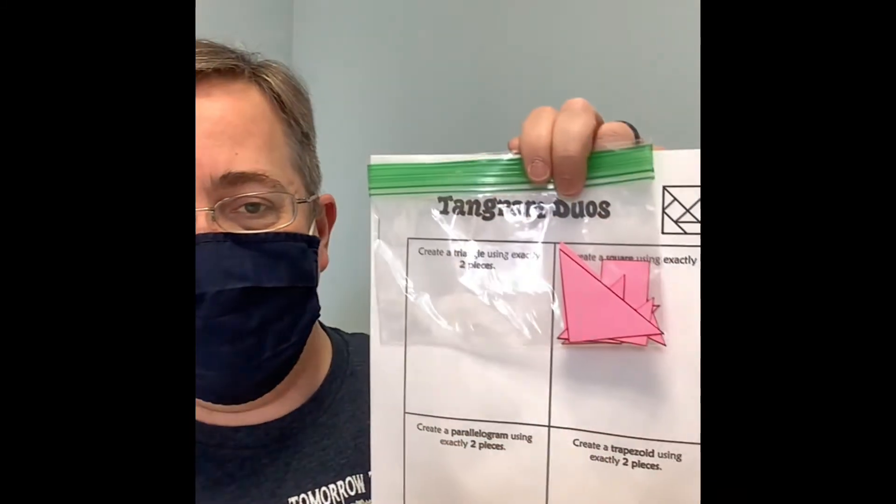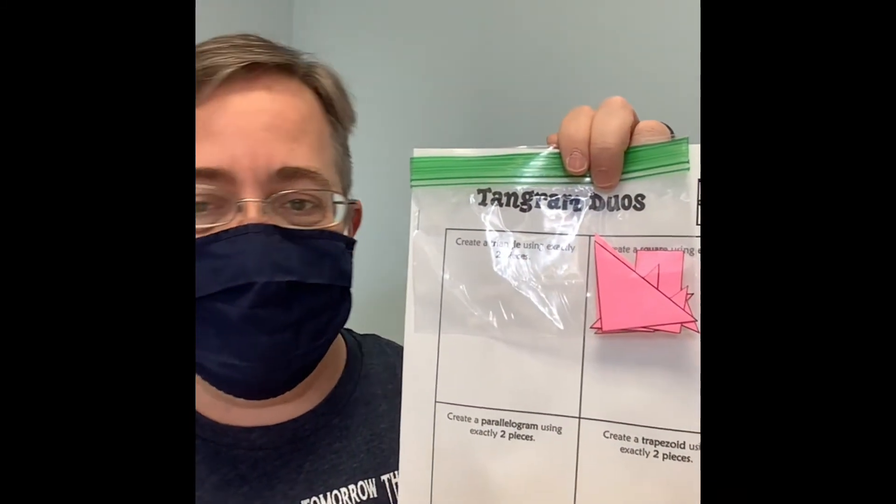Hi kids, welcome to another STEAM lab at the Lisbon Library. This month we're going to be looking at tangrams. You can pick up an activity supply kit in the children's room while they last. It basically has a few worksheets and a small bag of the tangram shapes.